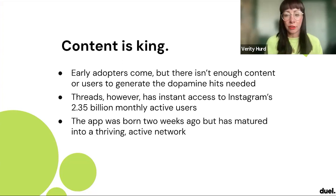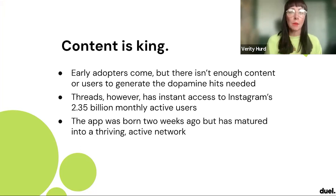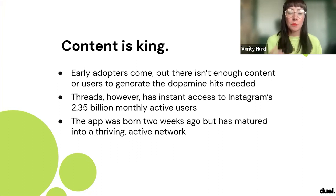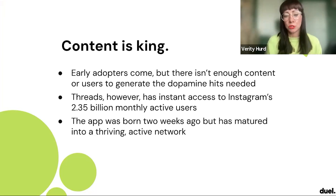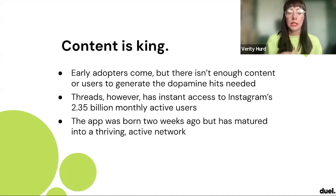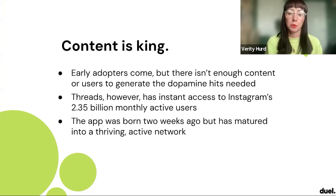If we all remember Clubhouse, it had a similar effect — early adopters come but there isn't enough content or users to generate that dopamine hit we want from a social media platform. But Threads has instant access to Instagram's 2.35 billion monthly active users. The app was literally born two weeks ago and it's already into a thriving active network. So even though engagement and some retention has dropped, the early growth has been completely off the charts, with tens of millions still coming back daily.